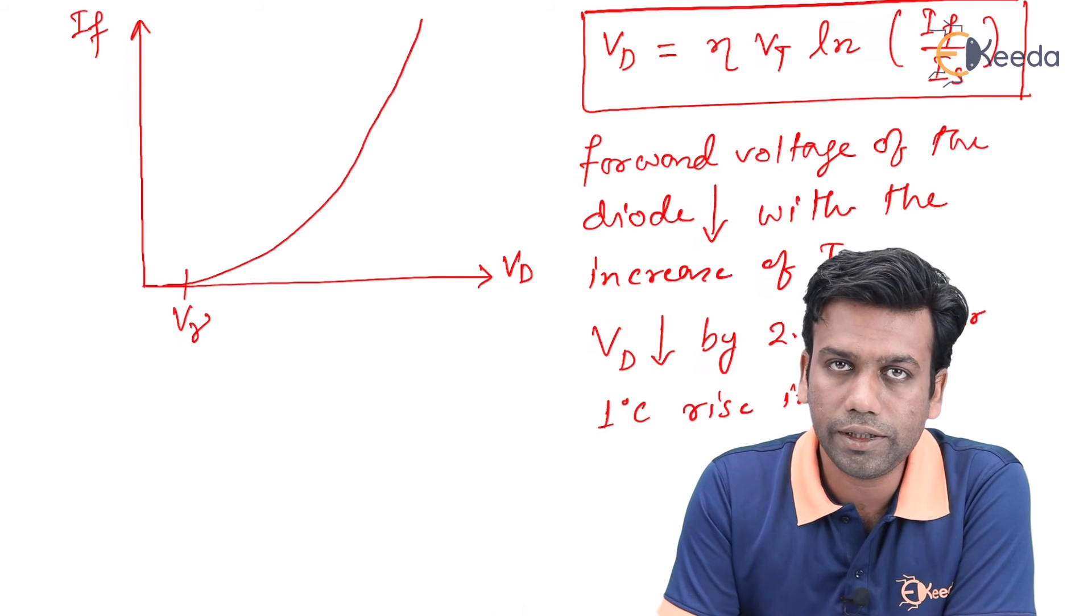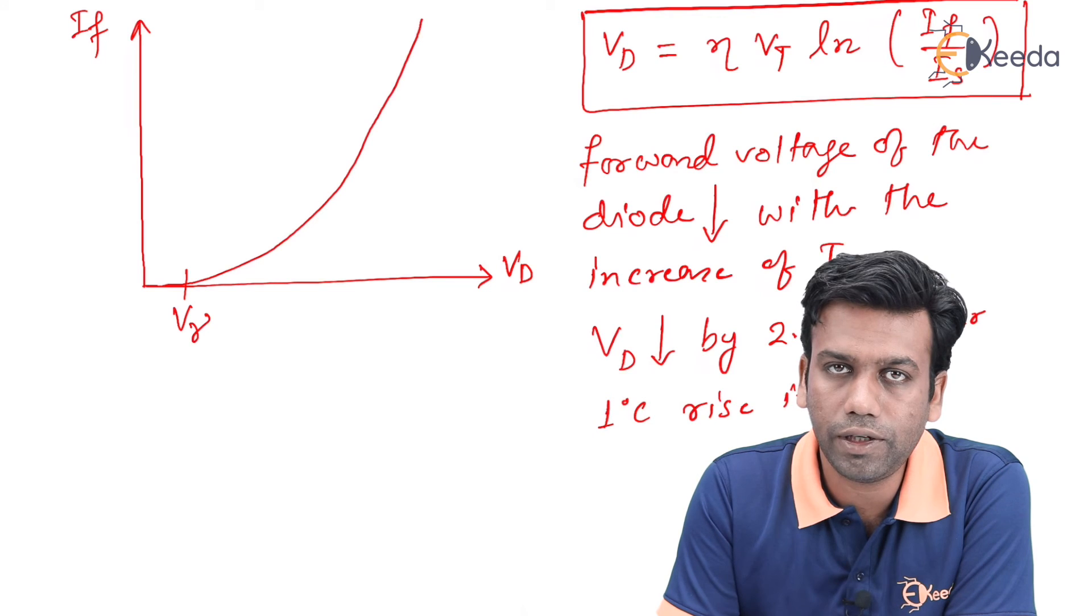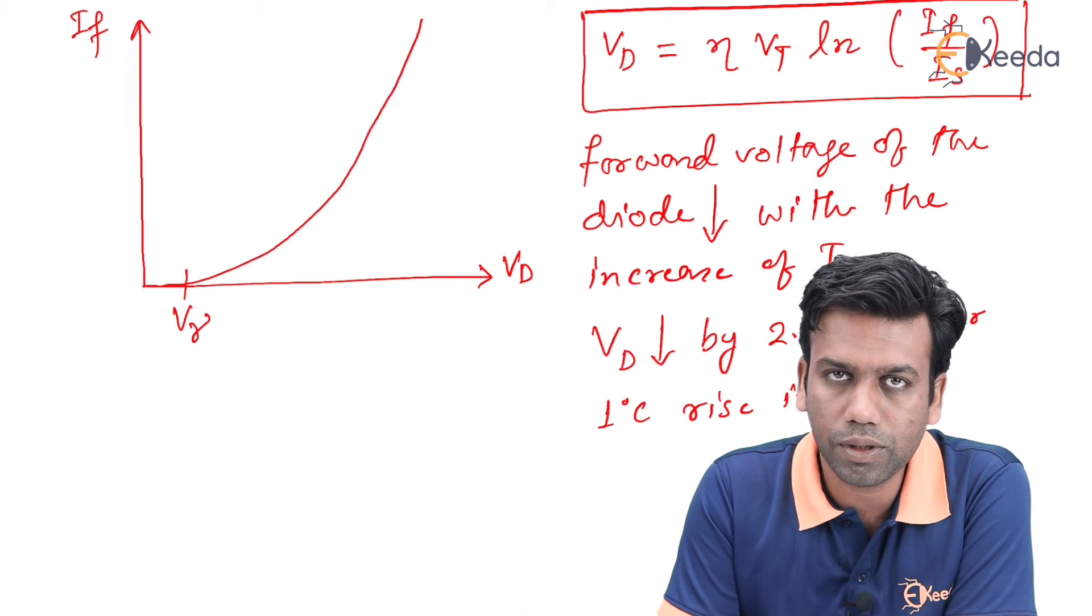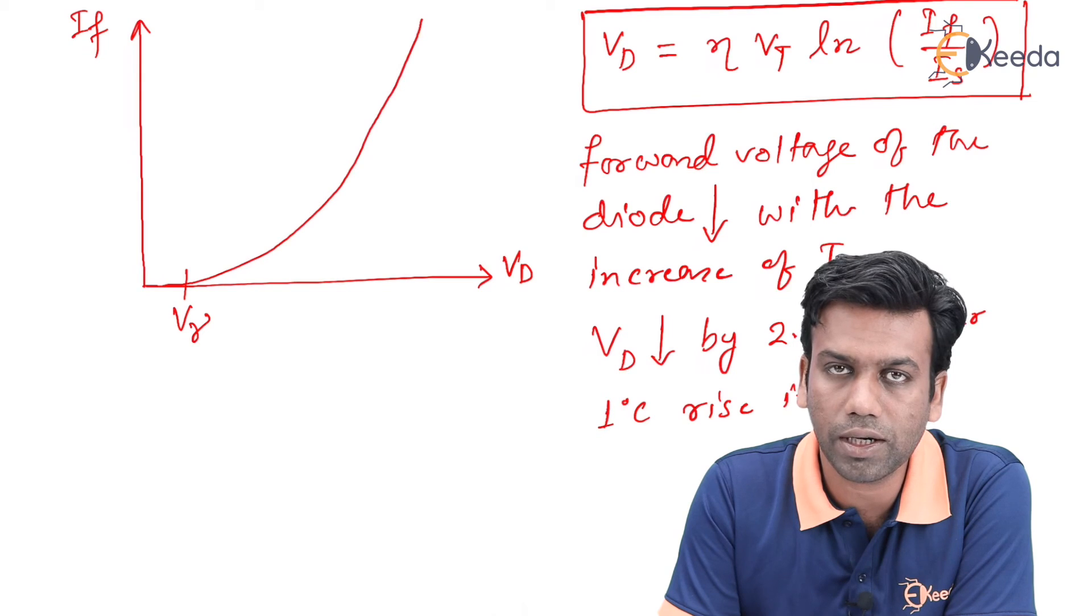This is all about the forward voltage of the diode with respect to the forward current and the reverse saturation current of the diode. Thank you.